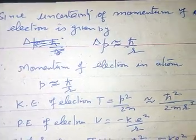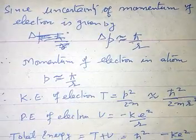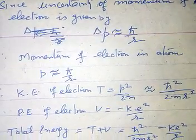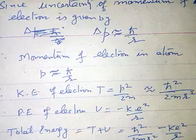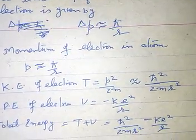Therefore, momentum of electron in atom p is equal to h cross upon r. Kinetic energy of electron will be p square upon 2m which is approximately equal to h cross square upon 2m r square.